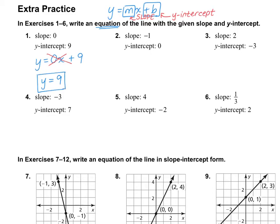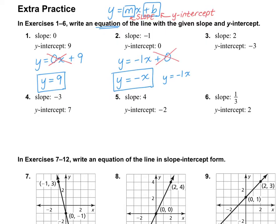On number 2, the slope is negative 1, so we write y equals negative 1x, and the y-intercept is 0, so plus 0. Since that's 0, we can take it out, and just write y equals negative x. You'll notice I didn't bother putting the 1 in there because it's not needed. However, if you wrote y equals negative 1x on a test or quiz, I would not mark it wrong. But this is cleaner, and we always go for as simple as we can when writing our answers.